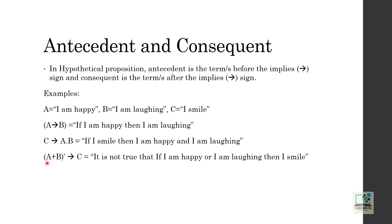In the last example, ¬(A∨B) implies C. Here, ¬(A∨B) — that is, the negation of A or B — is the antecedent, and C is the consequent. That means in the sentence, 'it is not true that I am happy or I am laughing' is the antecedent, and 'I smile' is the consequent.